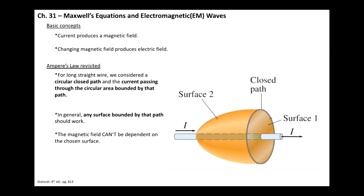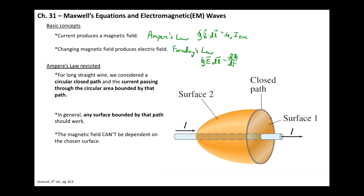Notice at the top, two basic concepts that we already have learned about. First, the idea that a current produces a magnetic field — we know this as Ampere's Law: B·dL = μ₀ I_enclosed. The second concept is that a changing magnetic field produces an electric field, which we first learned about in terms of an induced potential difference. The more general form is Faraday's Law: E·dL equals the negative time rate of change of the magnetic flux.